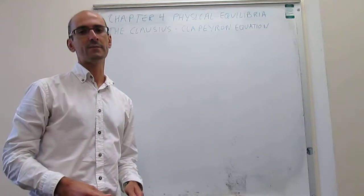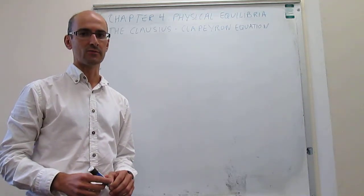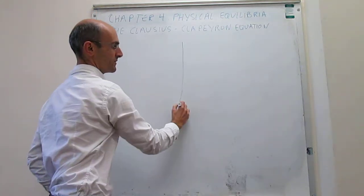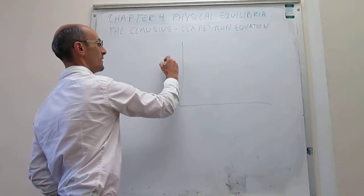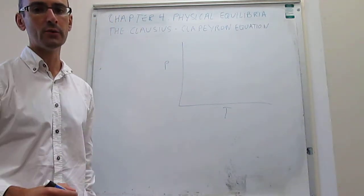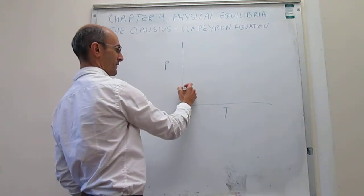In this video, we explain how to carry out a definite integration of the Clausius-Clapeyron equation. The Clapeyron equation and Clausius-Clapeyron equation are expressions that allow us to calculate the slope of the phase boundaries in a phase diagram.